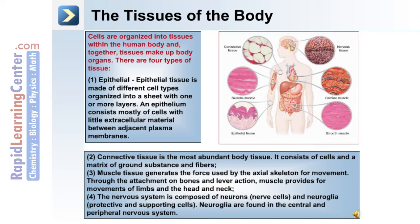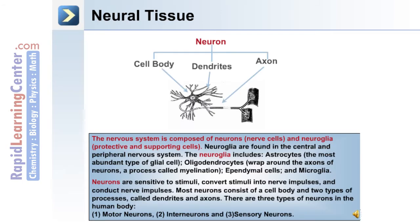The nervous system is made up of neural tissue: neurons, which are nerve cells, and the neural glia, which are protective and supporting cells. Neural glia are found both in the central and peripheral nervous system. The neural glia include astrocytes, oligodendrocytes, ependymal cells, and microglia.